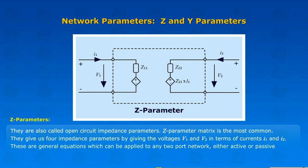They give us four impedance parameters by giving the voltages V1 and V2 in terms of currents I1 and I2. These are general equations which can be applied to any two-port network, either active or passive.